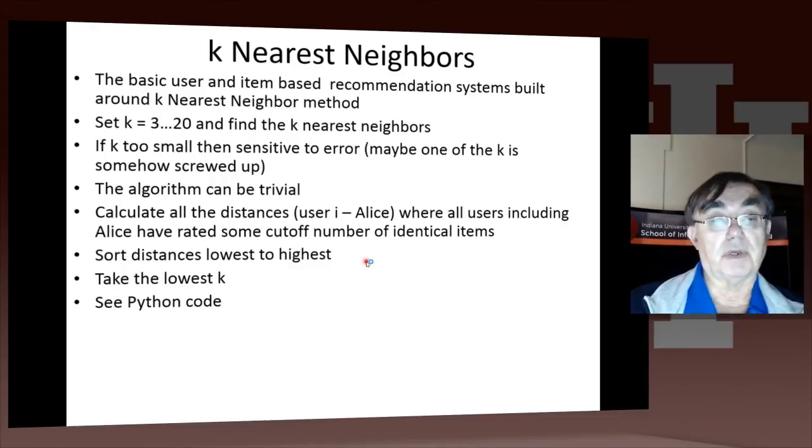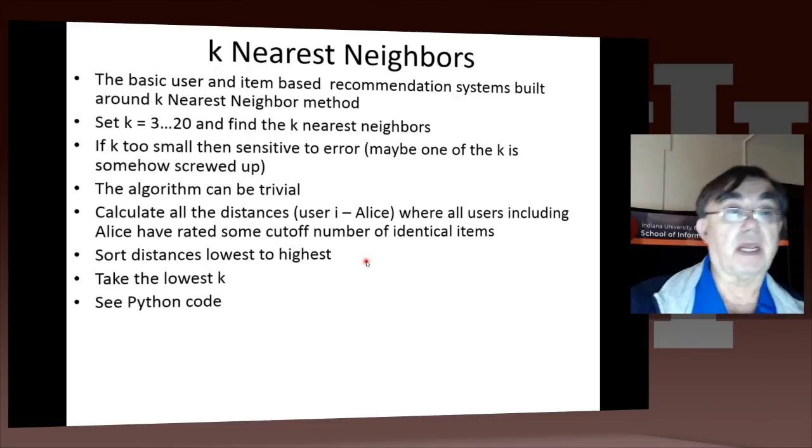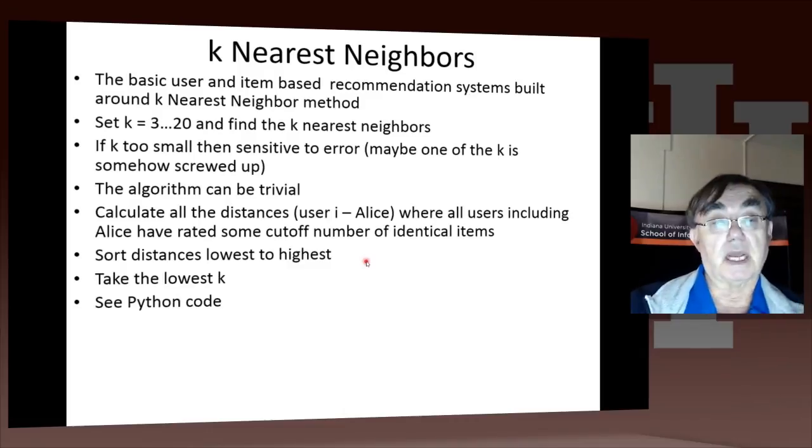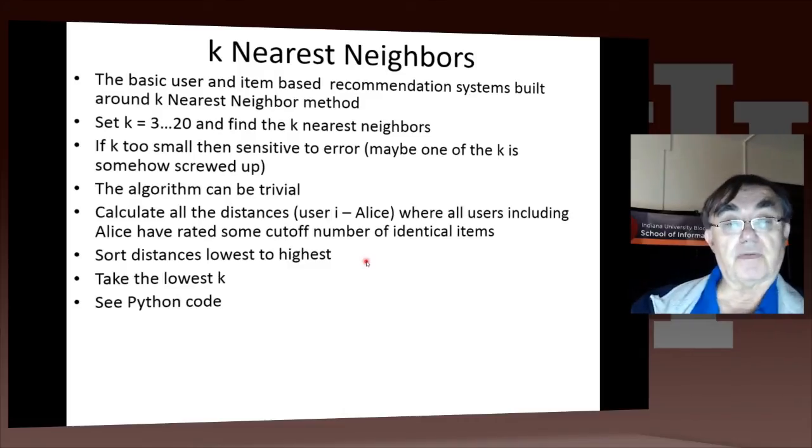All you do is calculate all the distances between, in this case, users and Alice for user-based collaborative filtering. Then you identify those users which are near Alice. If you have k of 3, you identify the three users that are nearest Alice. If k is 20, you identify the 20 users that are near Alice.